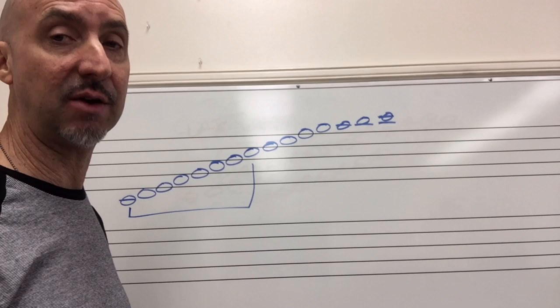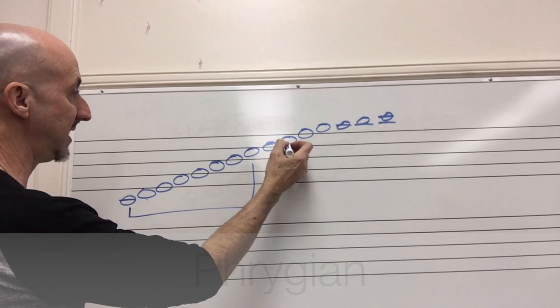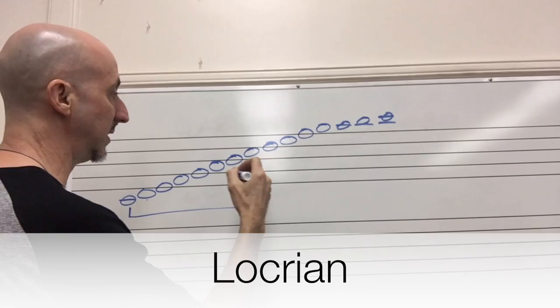Instead of calling it C major scale, we have C Ionian scale. D to D is Dorian, E to E is Phrygian, F to F is Lydian, G to G is Mixolydian, A to A is Aeolian, B to B is Locrian, and then we repeat the octave back to Ionian.